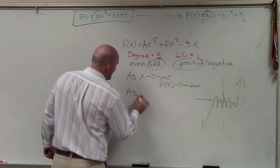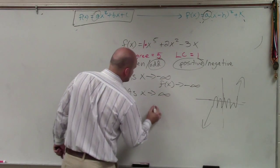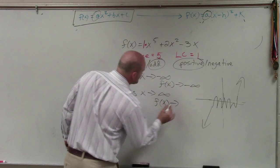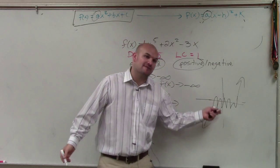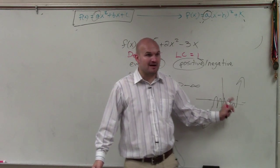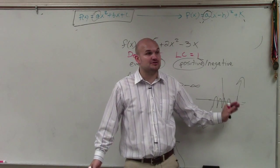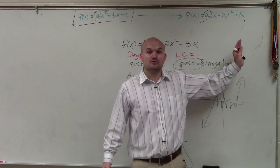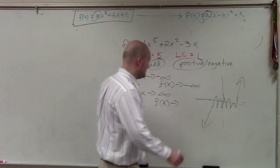Then I write the same thing. As x approaches positive infinity, f of x goes to where? So now, as my graph goes, as I'm moving to the right, the graph eventually, the y values do what? Go up. So it goes towards positive infinity.